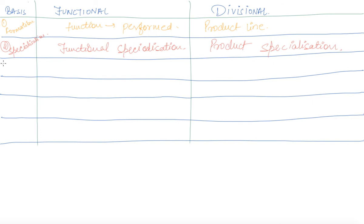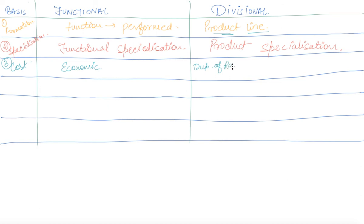Coming to the next basis, which is cost. In case of functional structure, there is no duplication — if one is good in production, he will be engaged only in production. Thus it is economical, as functions are not duplicated. But in case of divisional structure, there is duplication or replication of resources, and thus it is relatively costly as compared to the functional structure.